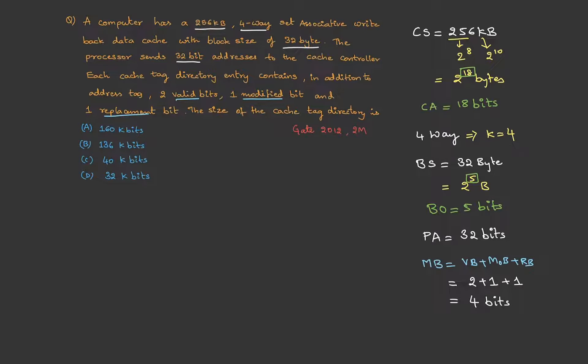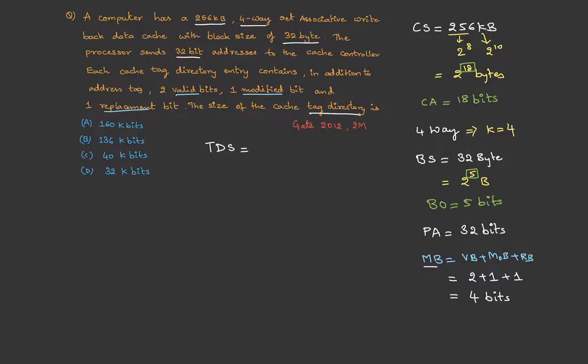And they are asking us to find the tag directory size. And we already know the tag directory size, whenever meta information is given, it is tag bits plus the meta bits, total multiplied by number of cache lines. So, we need to find the tag bits. We also need to find the number of lines and meta bits we have. So, for this, let me draw the diagram.